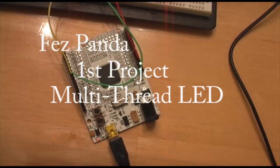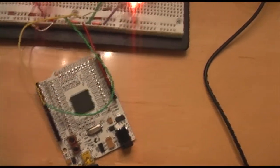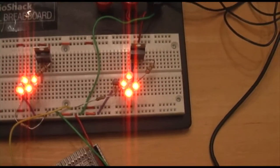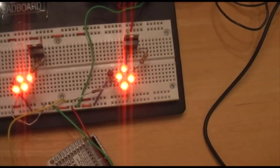Here's my Fez Panda project using a constant current structure for my LEDs. You can see the brightness of the LEDs.